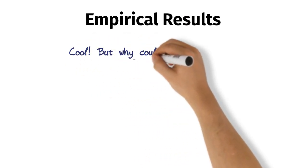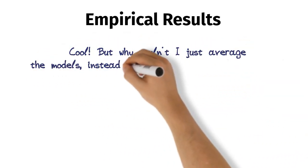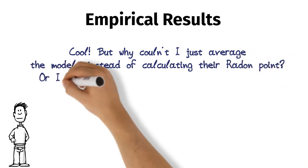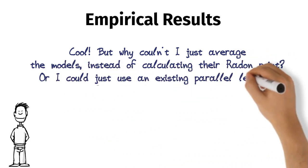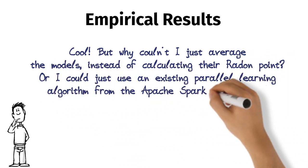Cool, but why wouldn't I just average the models instead of calculating the Radon point? Or I could just use an existing parallel learning algorithm from the Apache Spark MLlib, right?